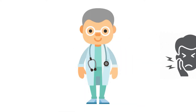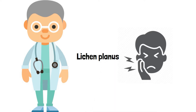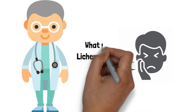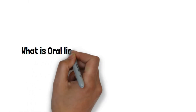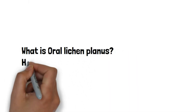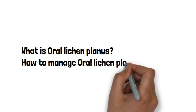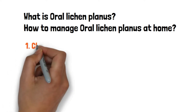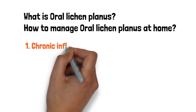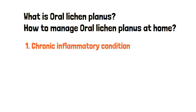At times patients come to the dentist with a complaint of a severe burning sensation in their mouth. On examination, some of them will be diagnosed with lichen planus, but most of them do not understand the nature of the disease or its progression. Hence, I am going to give a brief overview along with natural and home remedies for oral lichen planus. Oral lichen planus is a chronic inflammatory condition affecting various parts of the oral cavity.